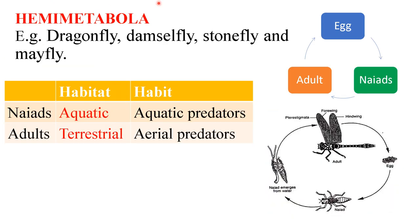The next one is hemimetabola. The examples are dragonfly, damselfly, stonefly, and mayfly. They have three life stages: eggs, nymphs, and adults. The nymphs are aquatic nymphs. The nymphs and adults have different habitats — the nymphs are aquatic in habitat while the adults are terrestrial in habitat. Considering habit, the nymphs are aquatic predators and the adults are aerial predators.